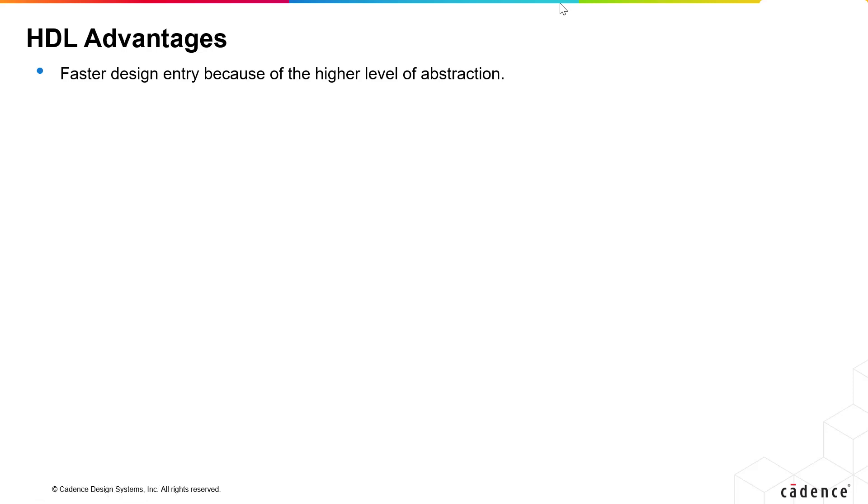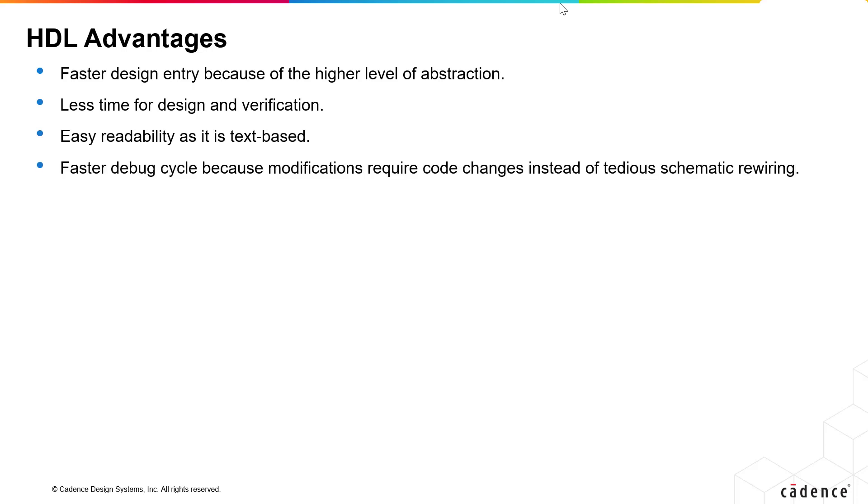Moving on to the advantages. Complex digital circuit designs require more time for development, synthesis, simulation and debugging. The invention of HDL has helped solve this problem. We can specify digital systems much faster instead of drawing the complete schematics due to the higher level of abstraction. It takes less time for design and verification as it is more modular, reusable and easily understandable. It is text-based and it is both machine and human readable. The debug cycle is also often much faster because modifications require code changes instead of tedious schematic rewiring.